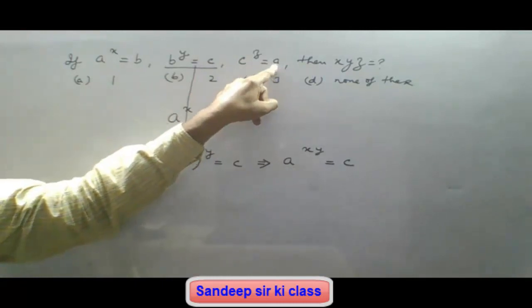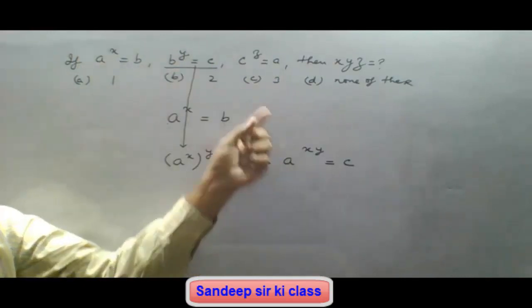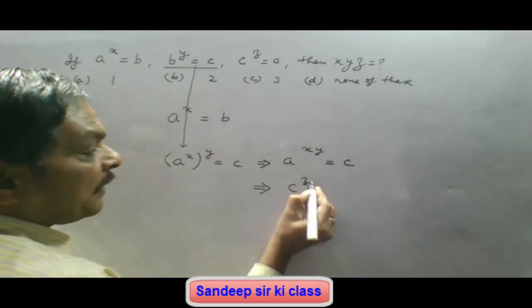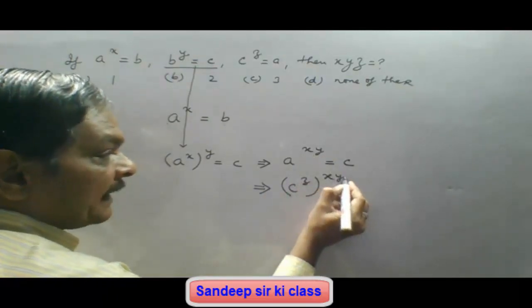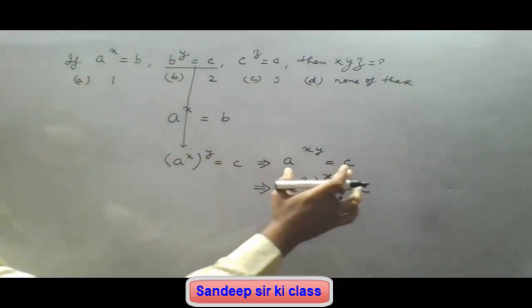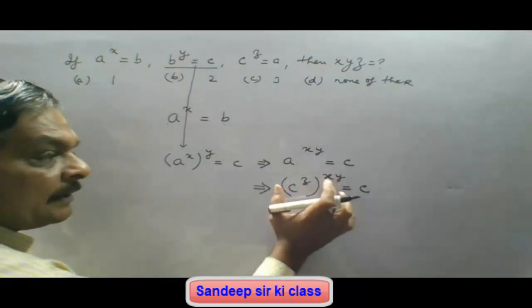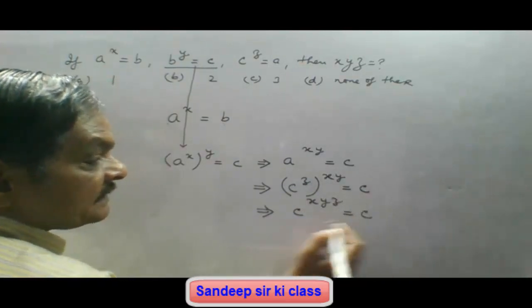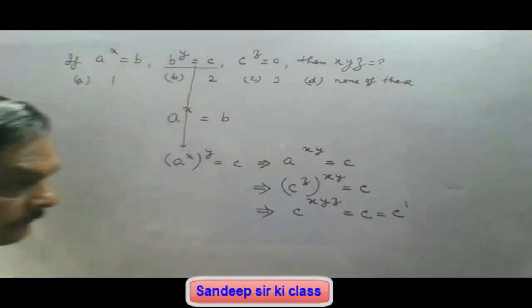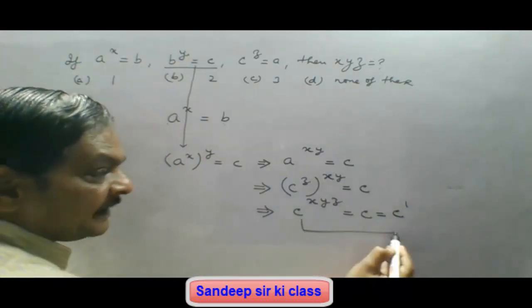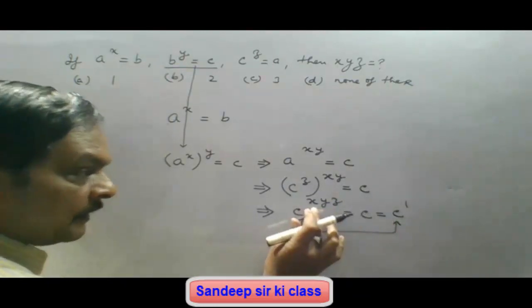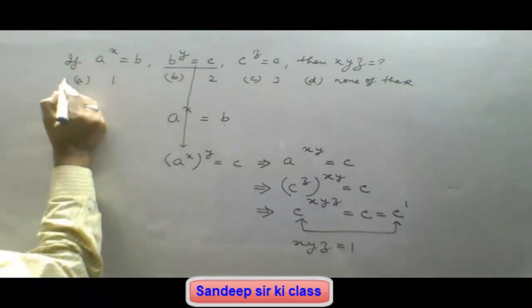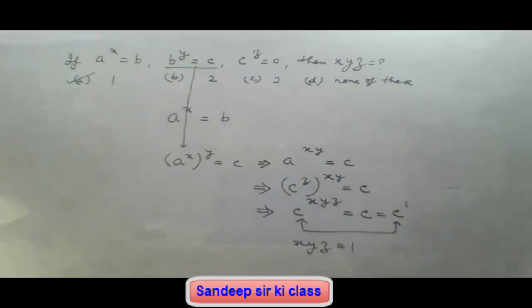Now we have c^z = a. Since a^(xy) = c, we substitute for c: (a^(xy))^z = ... wait — since c^z = a, we write the third equation as c^z = a. Substituting a^(xy) for c gives (a^(xy))^z = a, so a^(xyz) = a = a^1. Comparing both sides, base a is the same, so xyz = 1. Option A is correct.